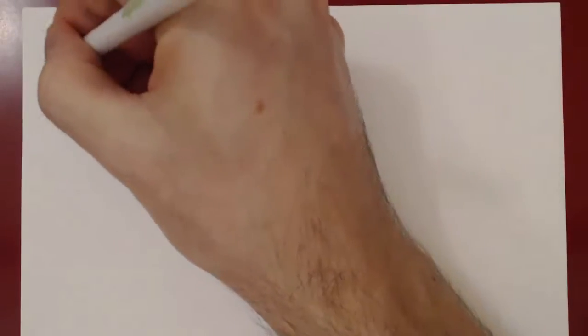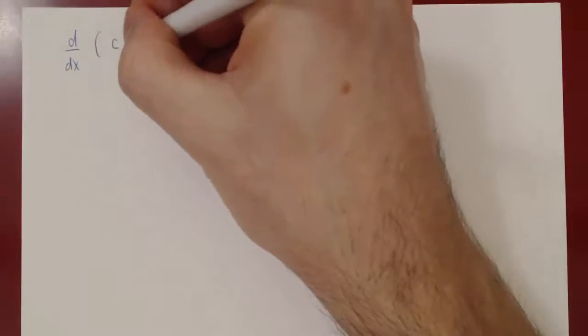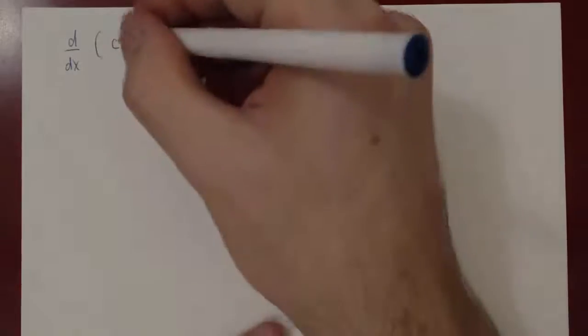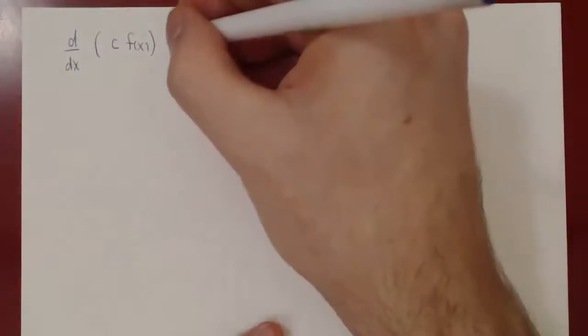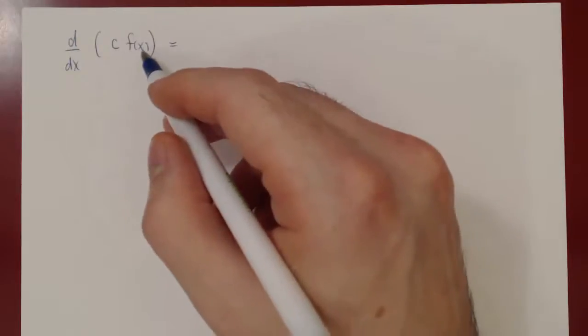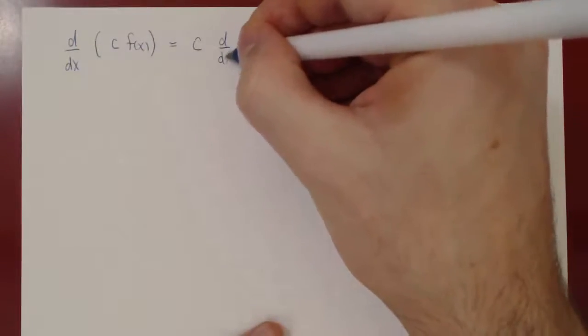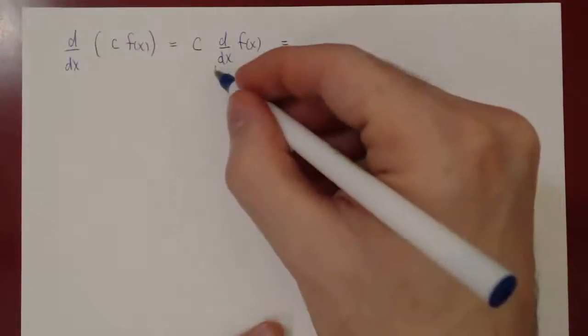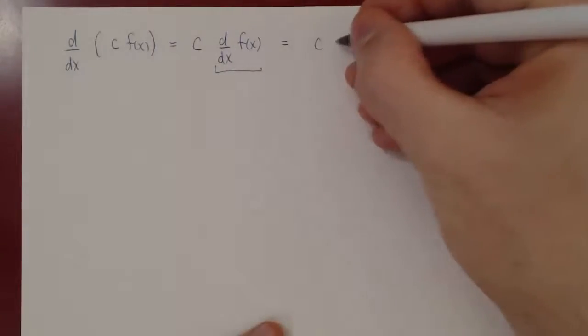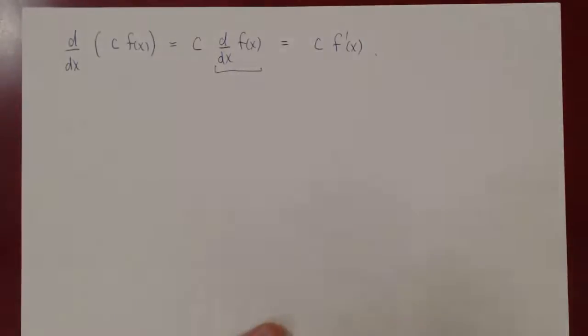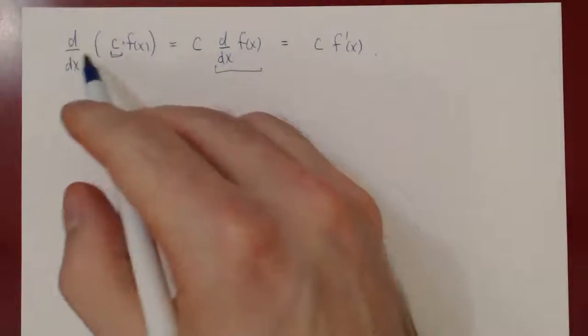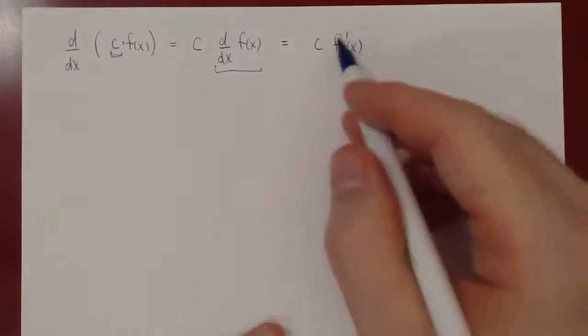Let's consider additional rules of differentiation. One rule is called the constant multiple rule. What if we differentiate a constant times a function? The derivative of a constant c times f of x is simply c times the derivative of f of x — c times f prime of x. C is a constant and it is a multiple of the function. So the derivative of a constant times a function is just a constant times the derivative of the function.